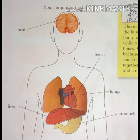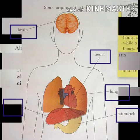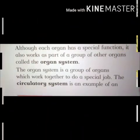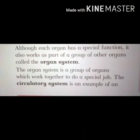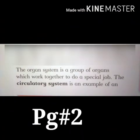You can see some organs of the body in the diagram on page number 3: brain, heart, lungs, stomach, liver. Now come back to page number 2, last paragraph.